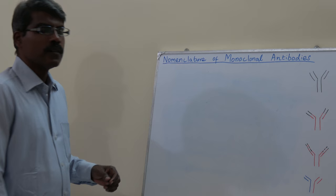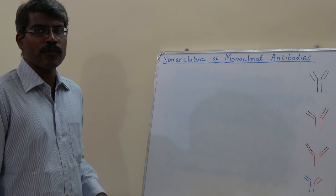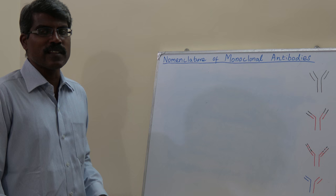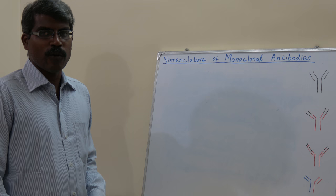Welcome to this session. We'll cover the nomenclature of monoclonal antibodies. The first rule is that all monoclonal antibodies end with '-mab'. The only exception to this rule is Muromonab.